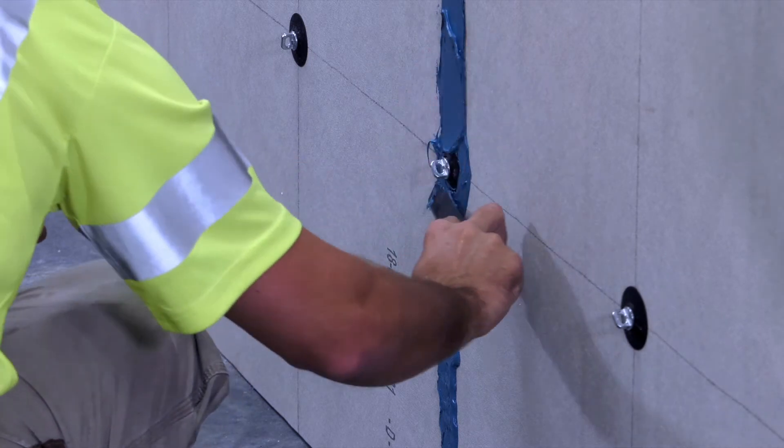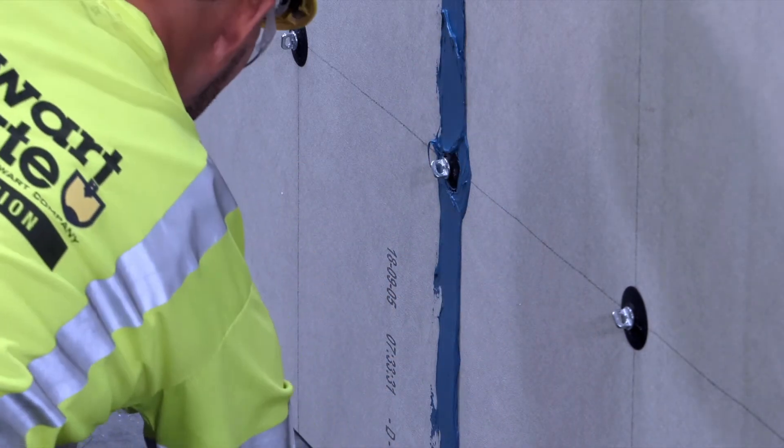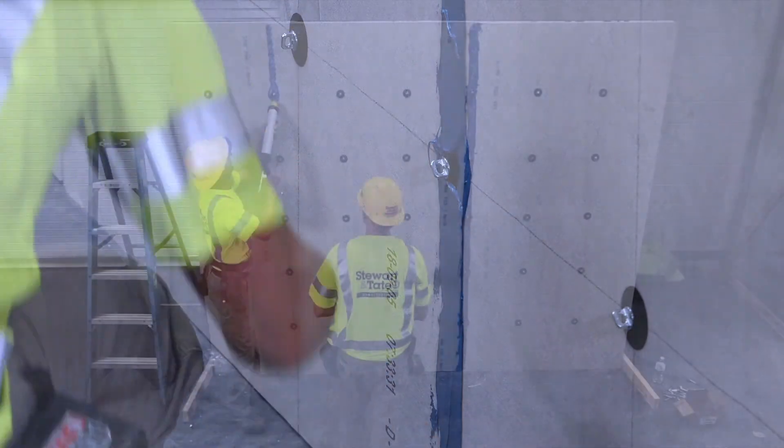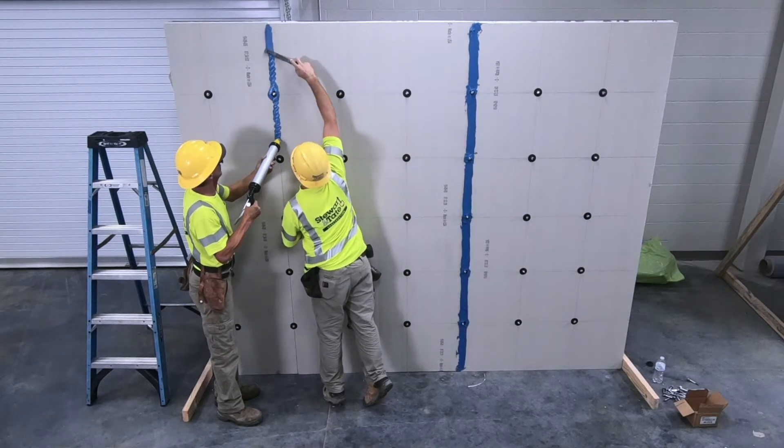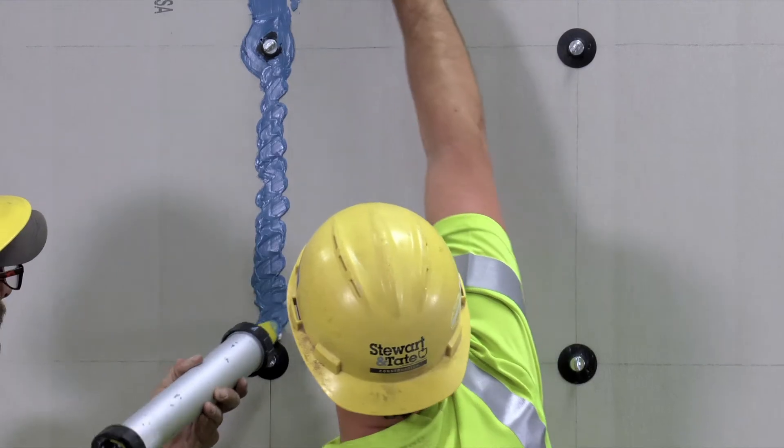Proper sealing of seams is required if the polyiso insulation will also serve air or water barrier functions. Repeat the process until it is finished. Then attach brick ties.